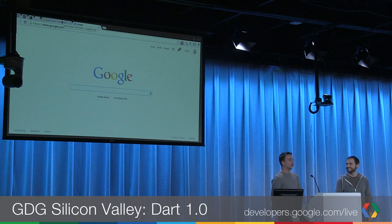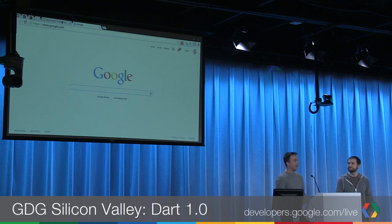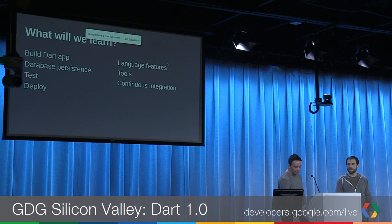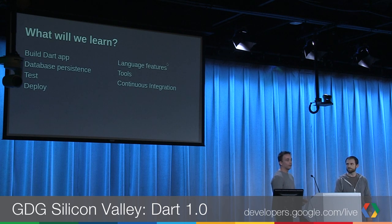Just to describe how that works: we did a client-side app in Dart and the server-side code in Dart. We're hashing the URLs and persisting them in a Redis key-value store, so that when you visit the URL, it pulls the hash out and sends you to the link. We're going to talk about testing, deploying, some language features, some tools — things like continuous integration. A lot of people here have a Java background, so I know you'll care about those.